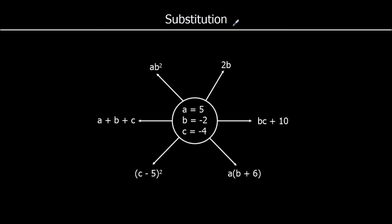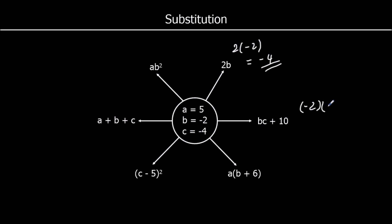I'm going to start with 2b. So b is negative 2, so it's 2 times negative 2, which is equal to negative 4. Next, bc plus 10 — bc means b times c. So it's negative 2 times negative 4, plus 10. Negative times a negative is positive, and 2 times 4 is 8. So it's 8 plus 10, which is 18.